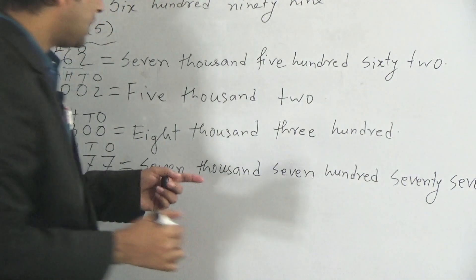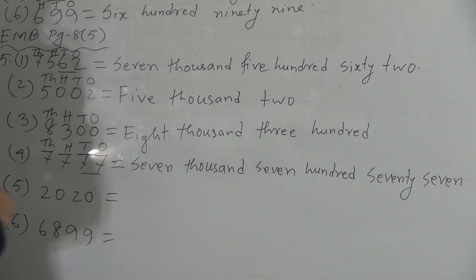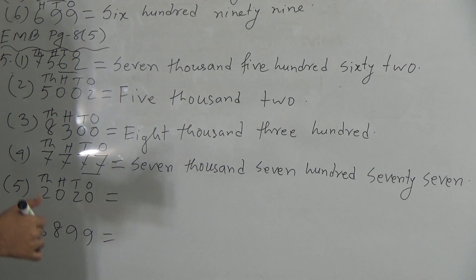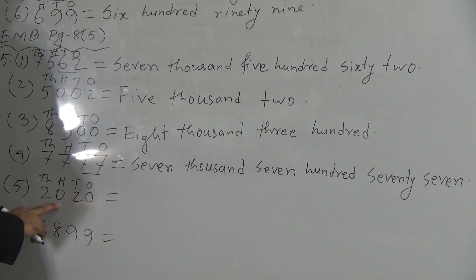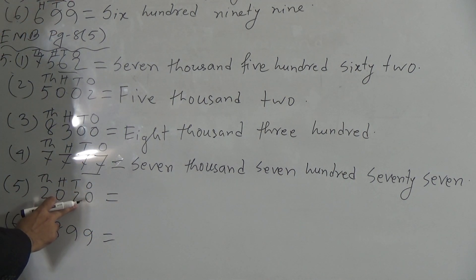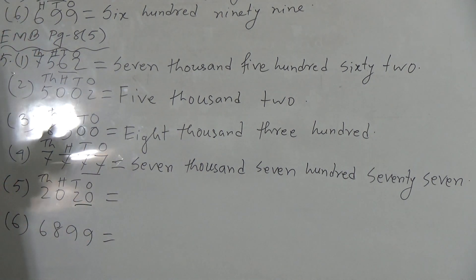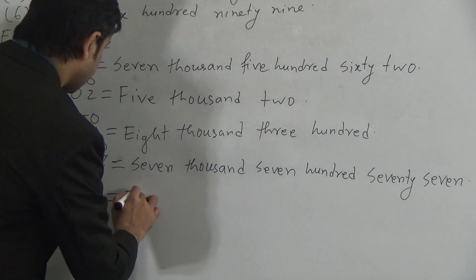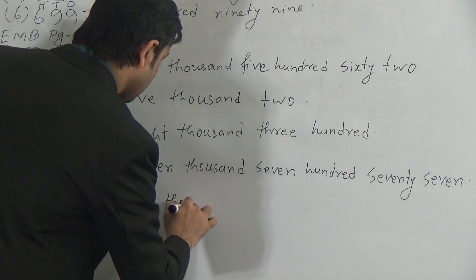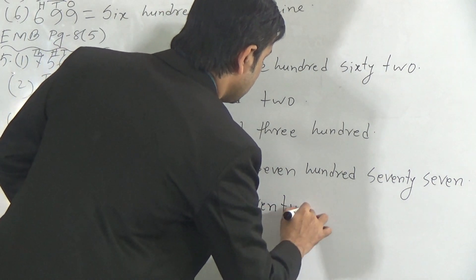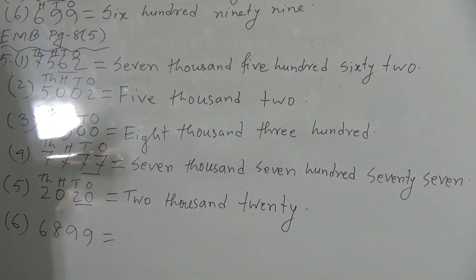Now question 5: 2 is in the 1000's, 0 is in the 100's, 2 is in the 10's, and 0 is in the 1's. As there are only zeros in the 100's position, so this will be 2,020.